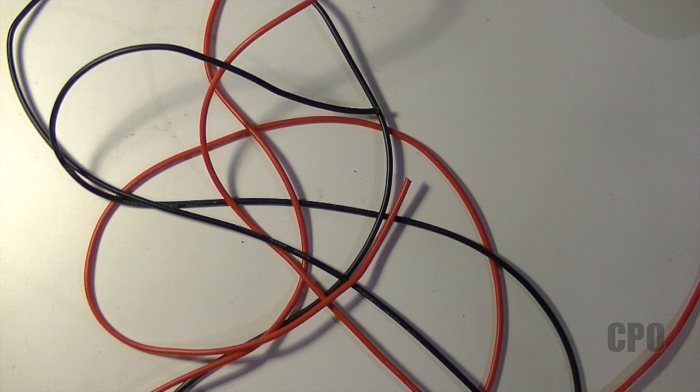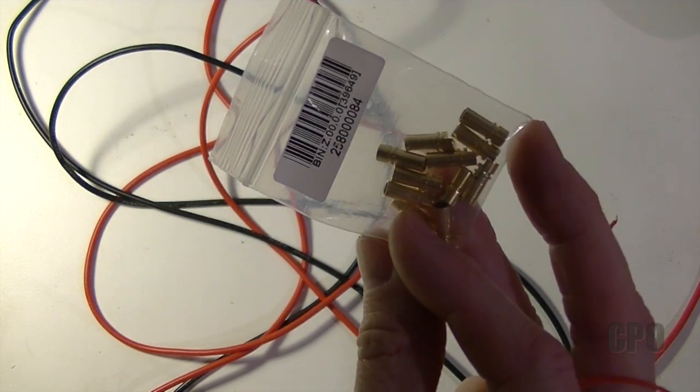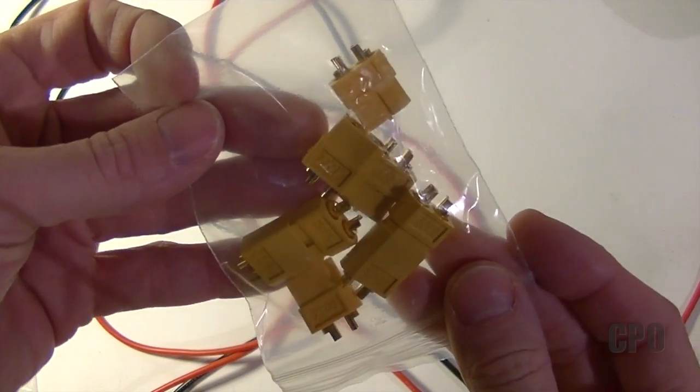So I'm using some silicone 16 gauge wire that I got from Hobby King. I have links in both black and red. So I'm going to need bullet connectors, the female ones, to connect to the ESCs and then I'm using XT-60s so I need the male side of those.